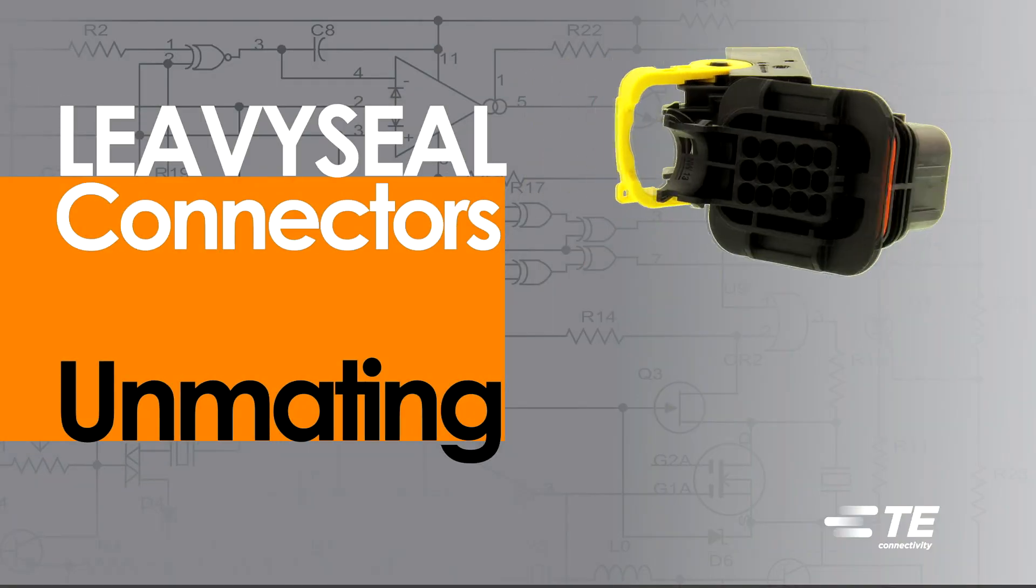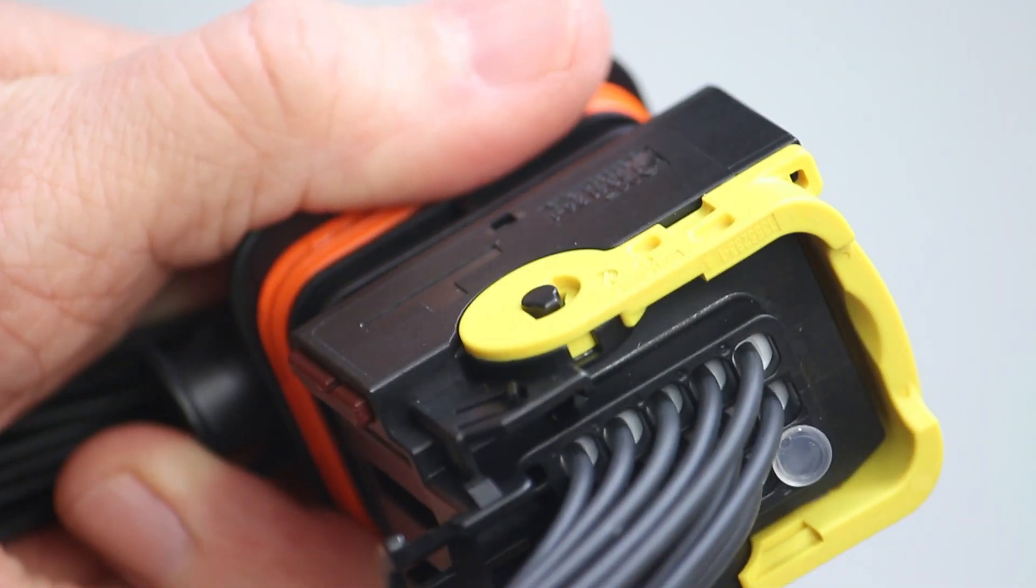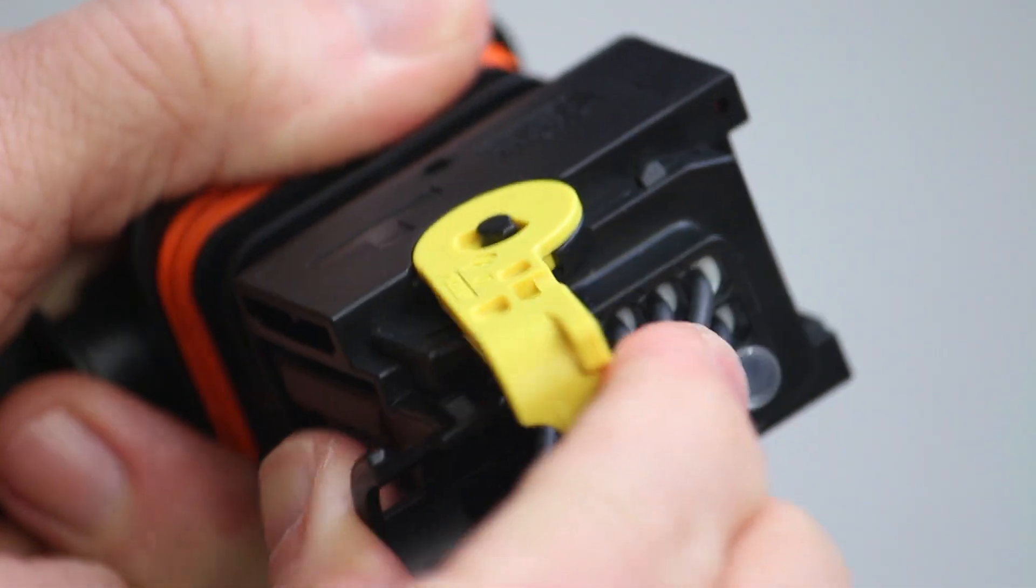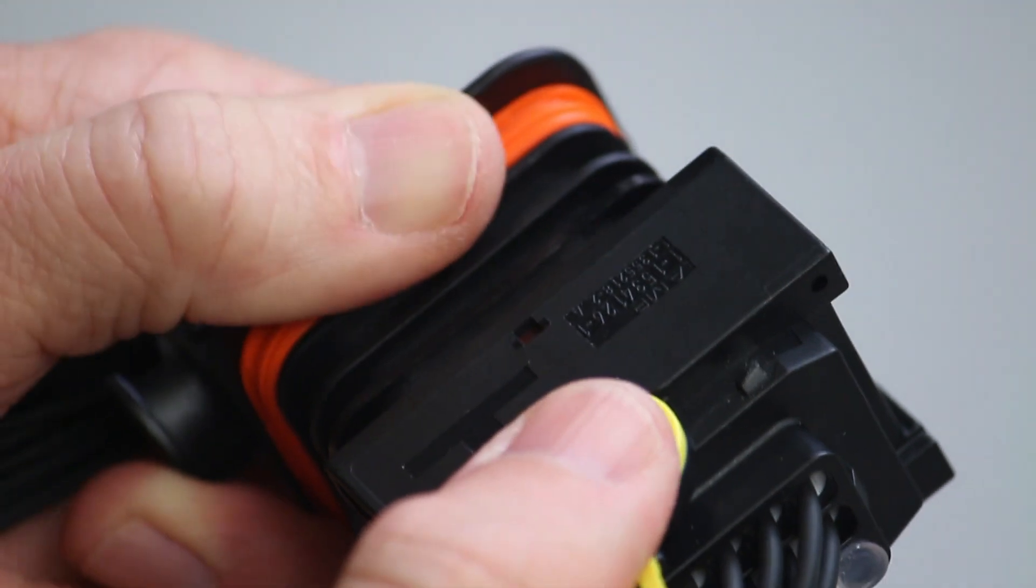Levee Seal Connector Unmating. To unmate Levee Seal Connectors, grasp the lever lock on the receptacle contact housing and pull up until it unmates from the tab housing.